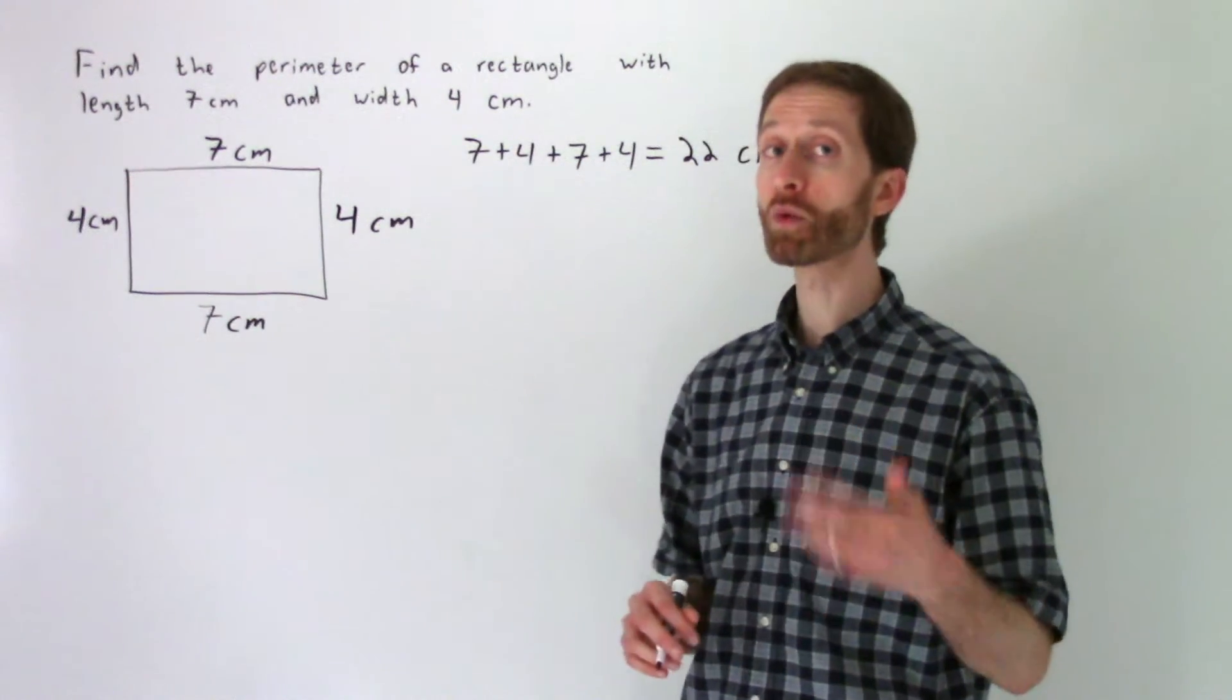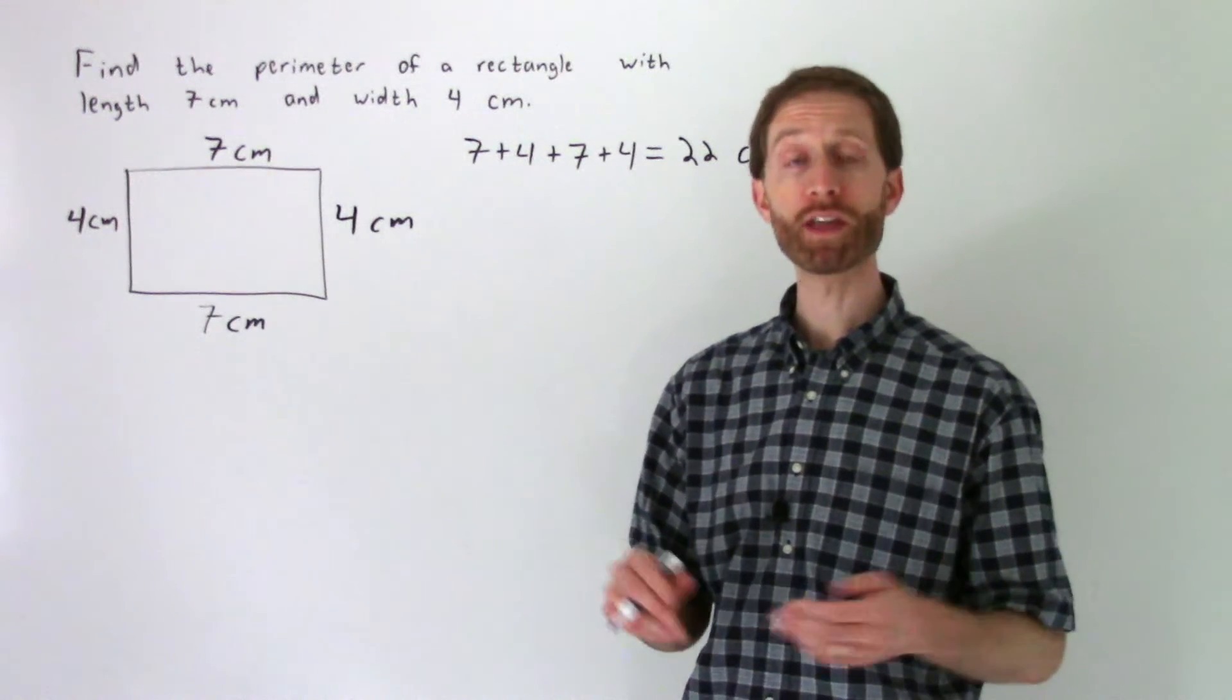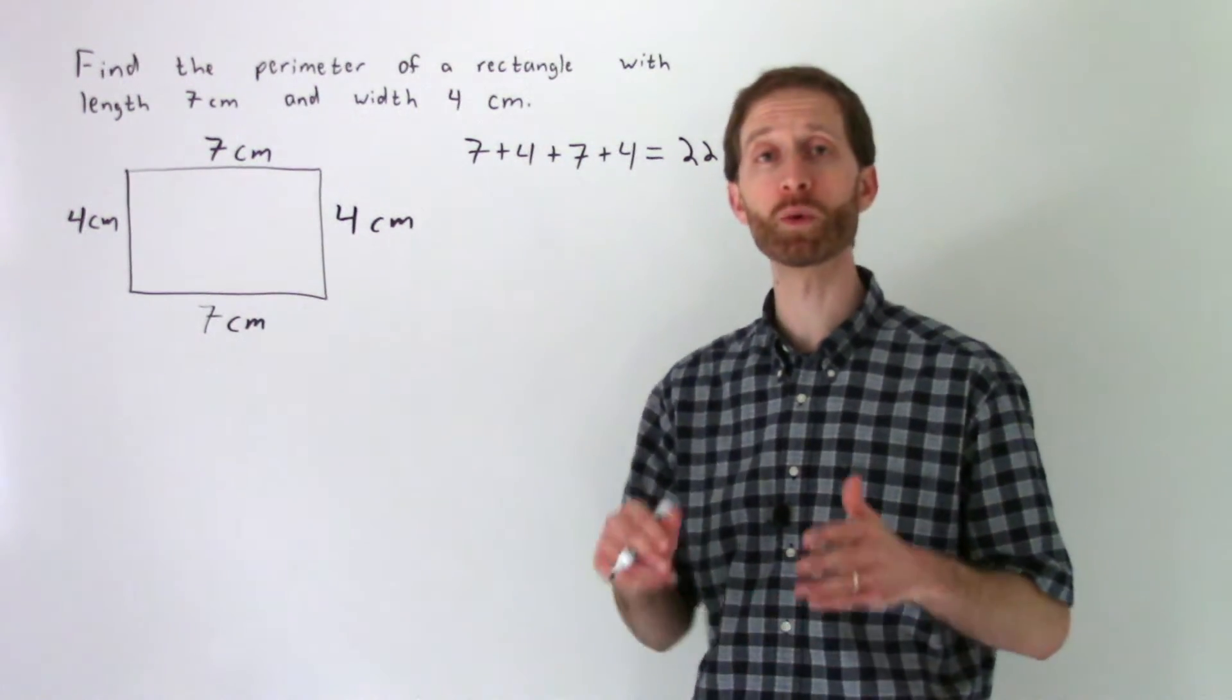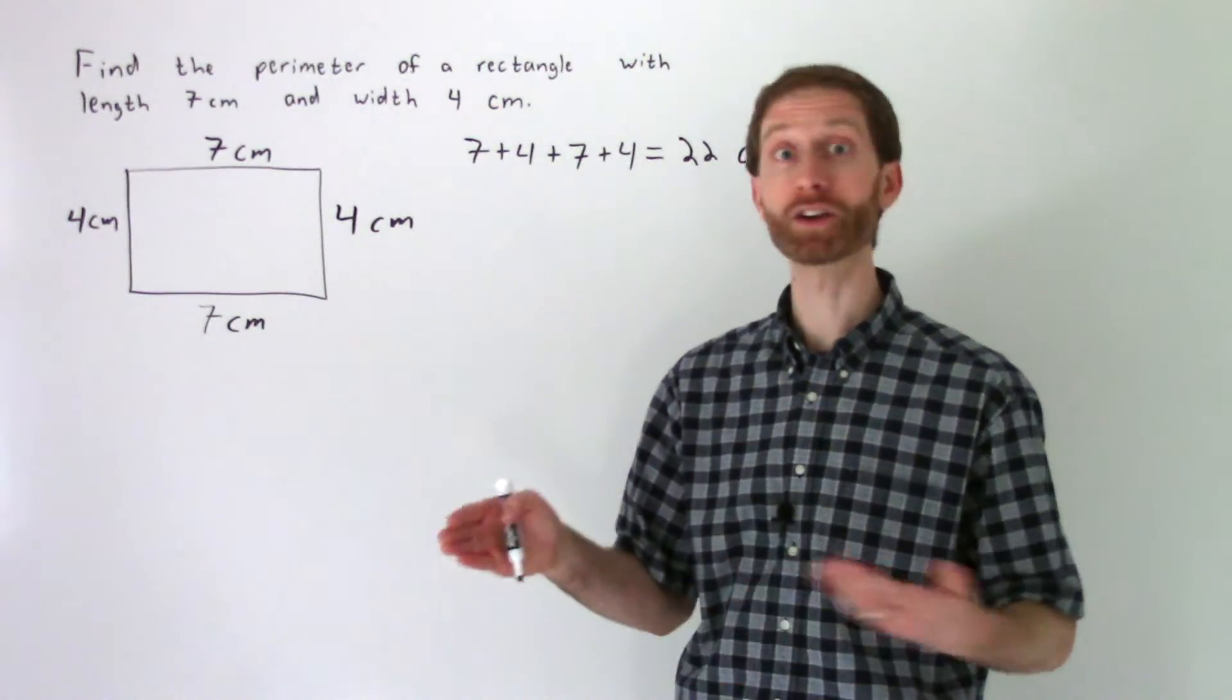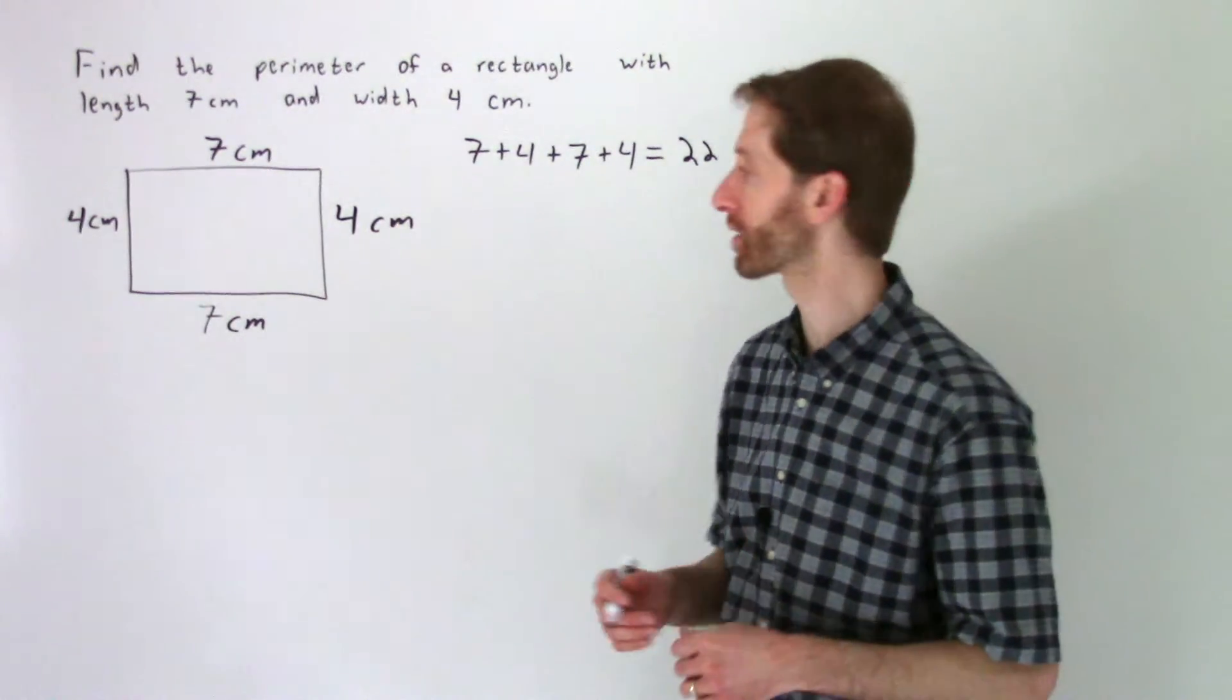Now there's another way to find perimeter of any rectangle, and that would be coming up with what's called a formula, which is something where we can just plug in the values and have our answer that we want come right out. Let's see how this formula works.